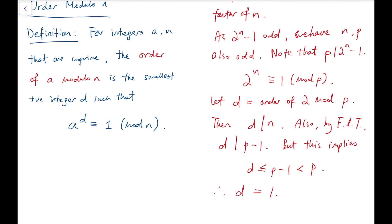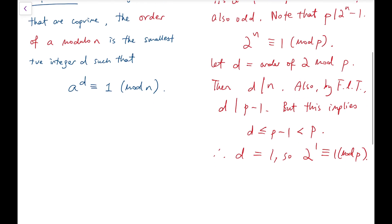So therefore d must be 1, and so 2 to the power 1 is congruent to 1 mod p. But that's impossible, because it means p divides 1.